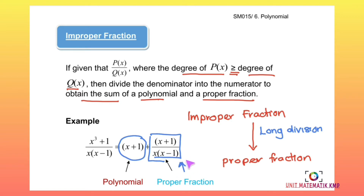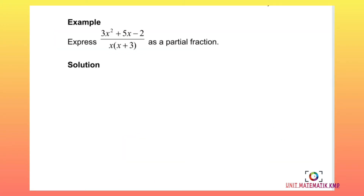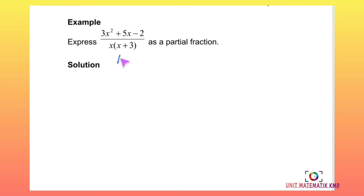Let's look at the first example — express this expression as a partial fraction. First, we need to check whether this is a proper or improper fraction. The degree of the numerator is 2 and the degree of the denominator is also 2. Since the degree of the numerator is equal to the degree of the denominator, this is an improper fraction.